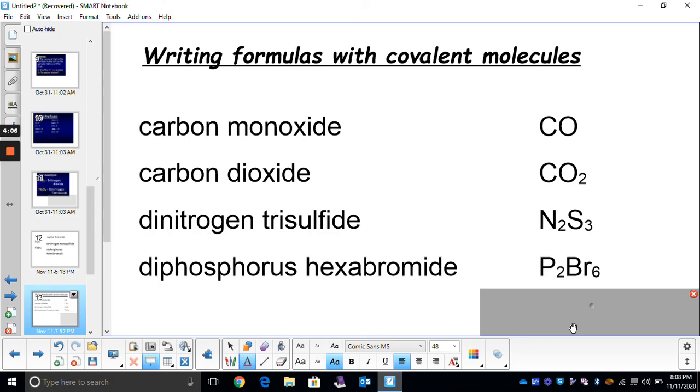When we write formulas for covalent, there is no balancing charges. You just write the formula how it sounds. When we're naming, we have to describe how many atoms we have of each in our formula. We still use -ide at the end of the second element.